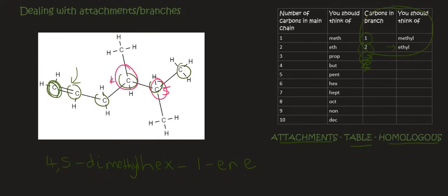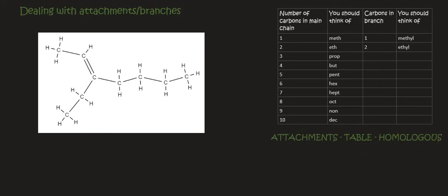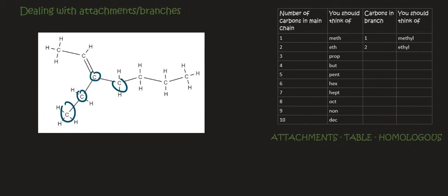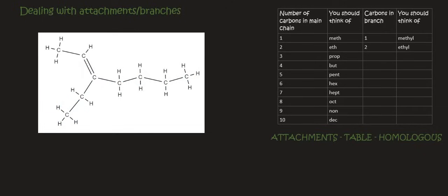This next molecule is quite interesting. We need to find the longest continuous chain that also includes the functional group. We could try a 5-carbon path, but let's see if we can do better. We can't go a route that eliminates the functional group entirely, making it become a branch — that doesn't work. The longest chain that includes the functional group turns out to be 7 carbons, so that's hept-.